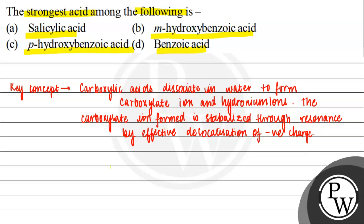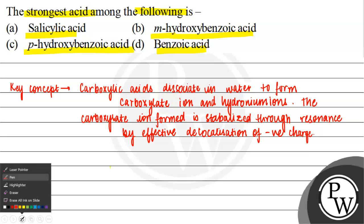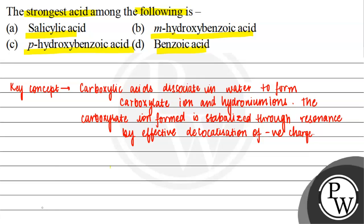Now let us talk about the structures of salicylic acid, meta-hydroxybenzoic acid, and the others. Salicylic acid has a benzene ring with a COOH group and an OH group attached — this is our salicylic acid.